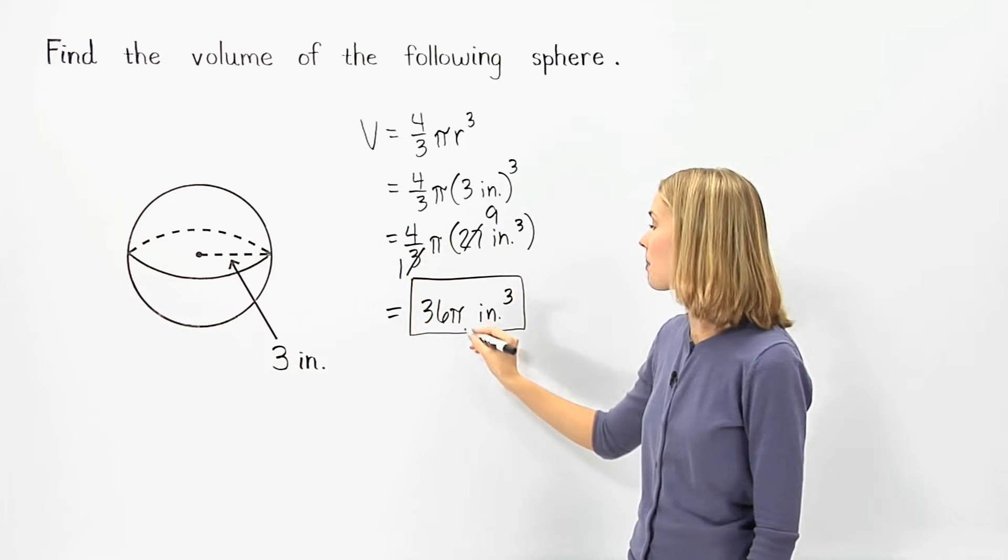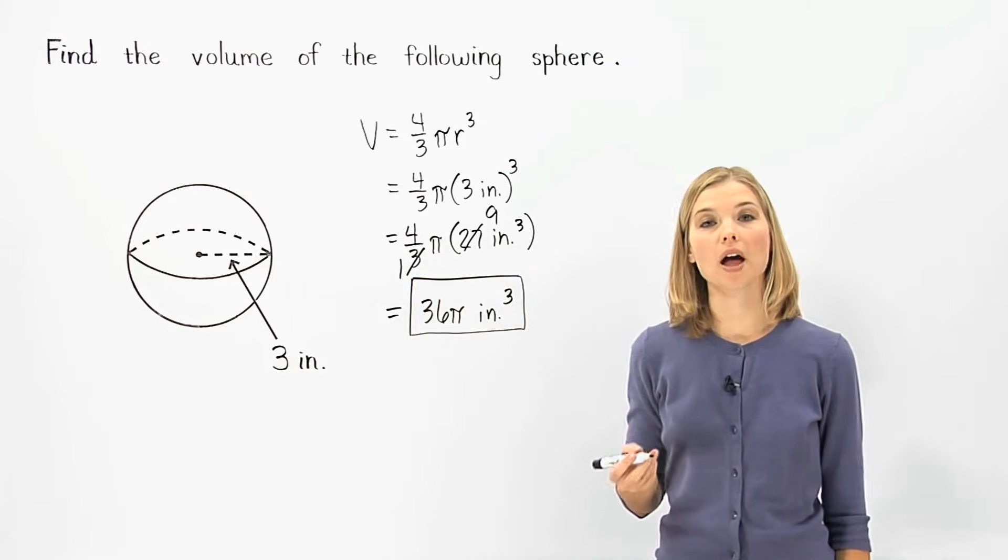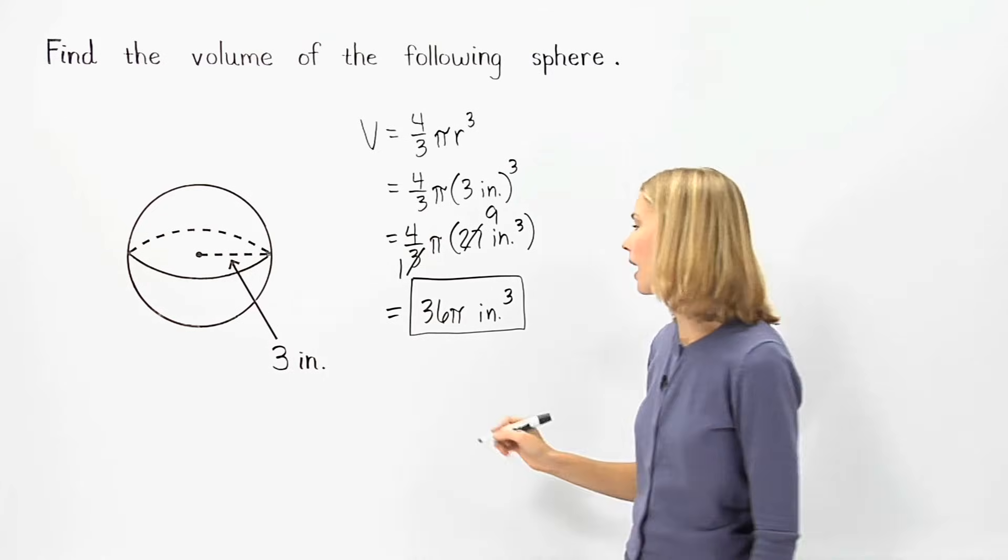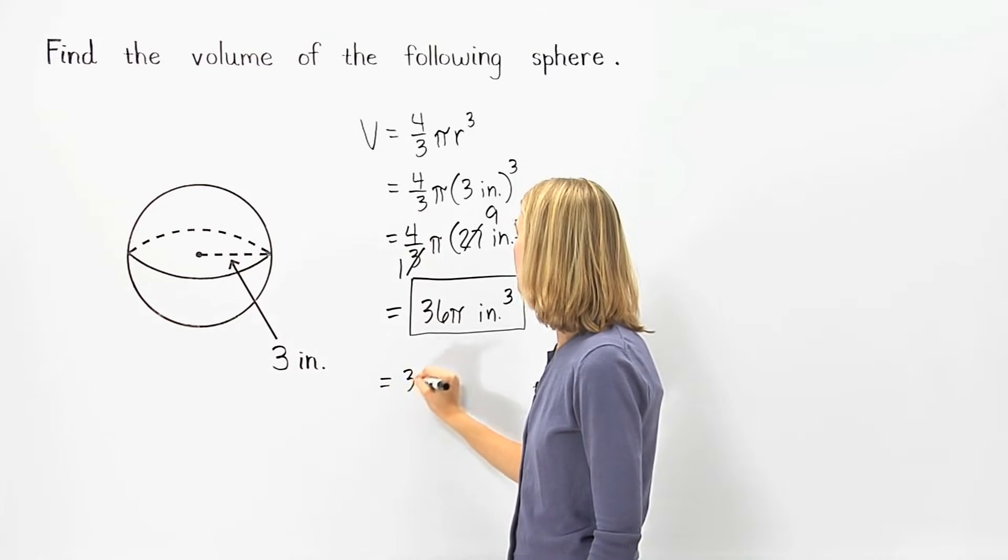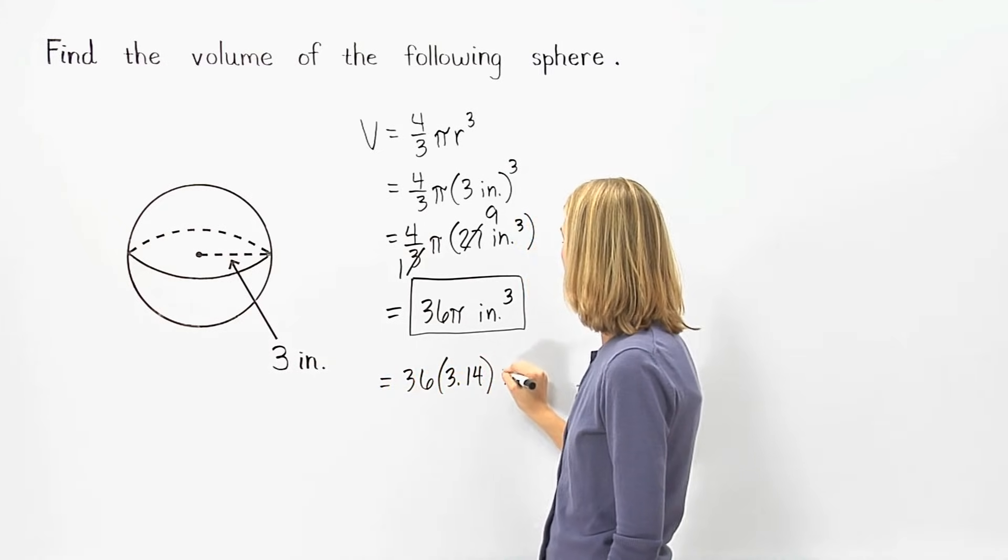Next, remember that pi is approximately equal to three point one four. So we can plug three point one four in for pi, and we have thirty-six times three point one four inches cubed.